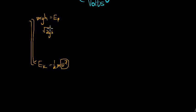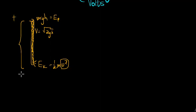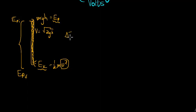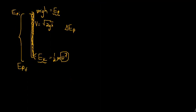Don't worry about that if you have no idea what I'm talking about — it's not that important. All I'm trying to show is that the flow of water down this pipe has to do with the difference in energy: the potential energy at the top versus the potential energy at the bottom. If there's still some potential energy at the bottom, not all the initial potential energy was converted to kinetic energy. It's all about the difference — the change in potential energy.